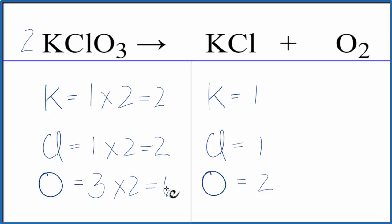And now that's an even number, so to fix that, I could just put a three in front of my O2. Two times three, that equals six, so the oxygens are balanced.